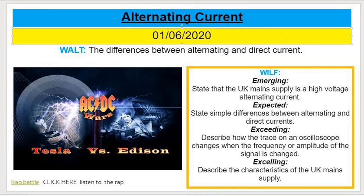You should have watched a video on Tesla and Edison giving you some idea of what happens with electricity. Our lesson objectives: to identify the UK mains supply, explain the difference between alternating and direct current, and to be able to trace or draw the graph showing the frequency and the amplitude of direct or alternating current.